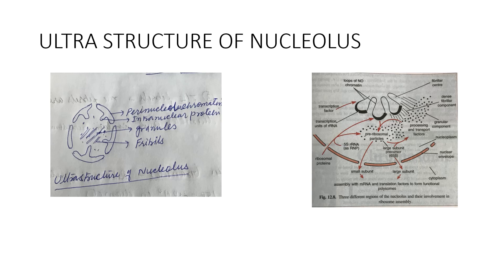Number 2 is Nucleolar Associated Chromatin. Associated with the nucleolus is chromatin which contains abundant DNA. This DNA serves as a template for the synthesis of ribosomal RNA. The chromatin fibrils which surround the nucleolus are called perinucleolar chromatin.